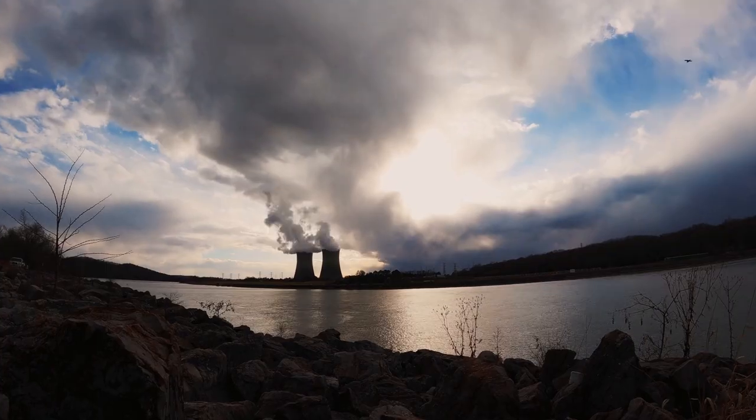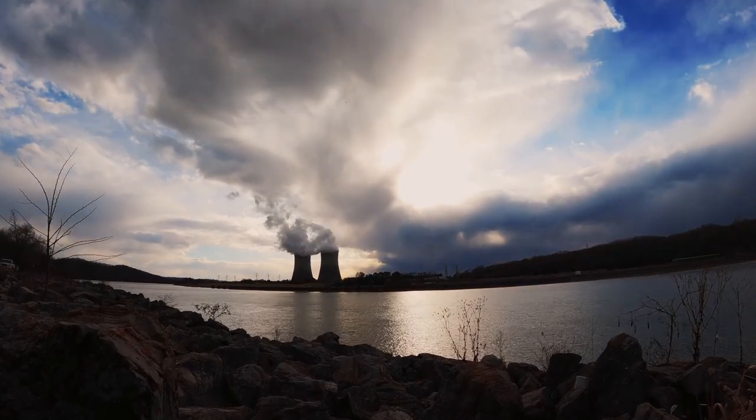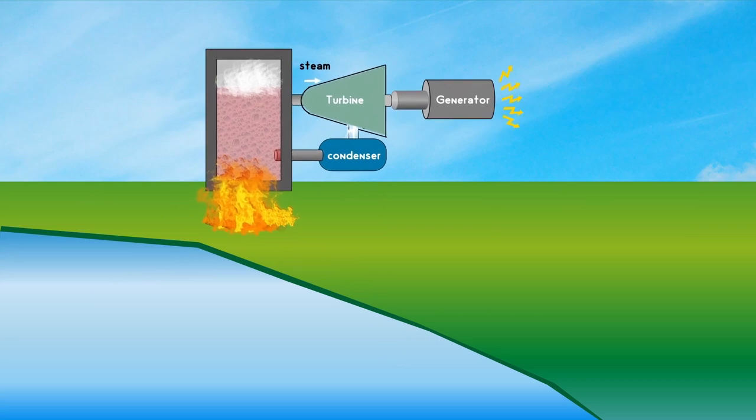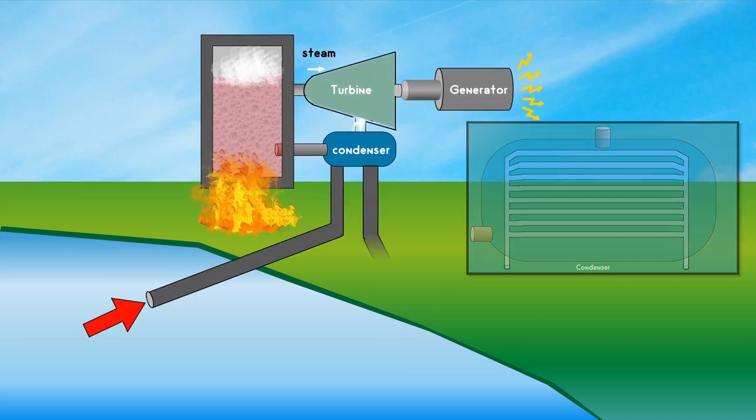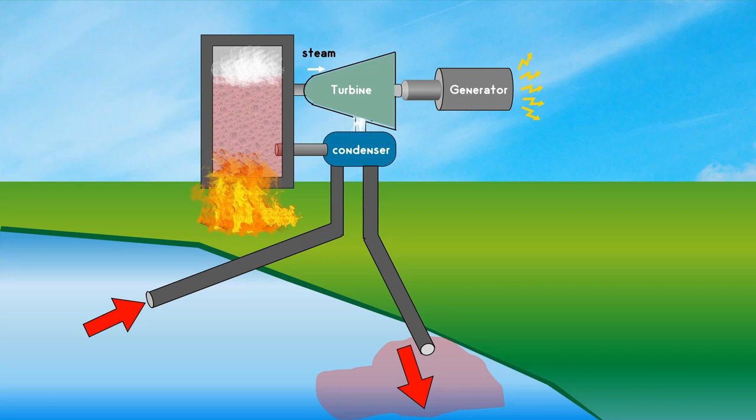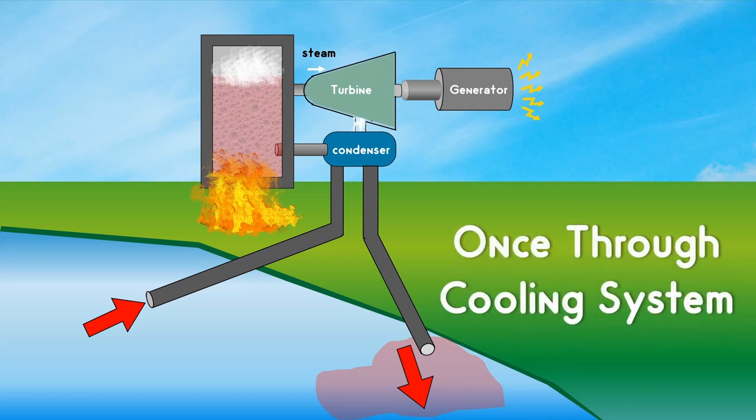To get easy access to cold water most power plants are built near large rivers, lakes or seas. The cold water is drawn from here to flow through the tubes and then it is pumped back while it is still hot. This type of system is called once through cooling system.